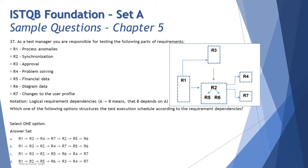The question asks which option structures the test execution schedule according to requirement dependencies. R3 and the R2 block are both dependent on R1, so R1 must be executed first. R3 and R2 block are on the same dependency level after R1, but R2 is also dependent on R3 — so you cannot go directly to R2 without first executing R3.